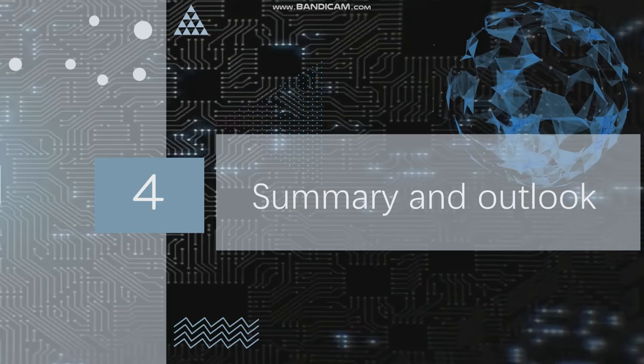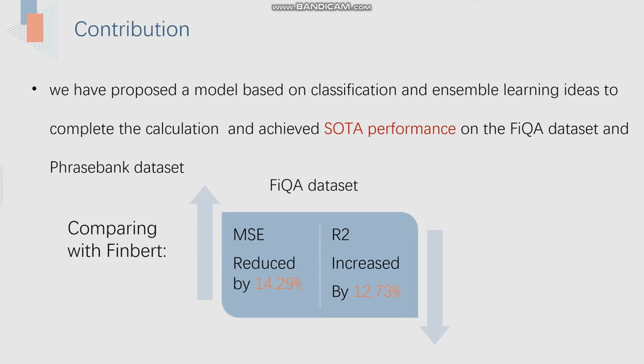The fourth part is summary and outlook. The contribution of our paper is that we have proposed a model based on classification and ensemble learning ideas to complete the calculation, and achieved SOTA performance on the FIQA datasets. Comparing with FinBERT, we made the MSE reduced by 40.29% and increased R-square by 12.73%.